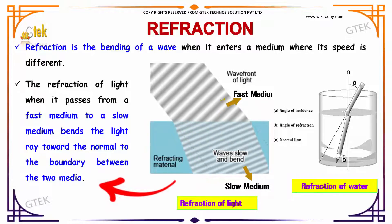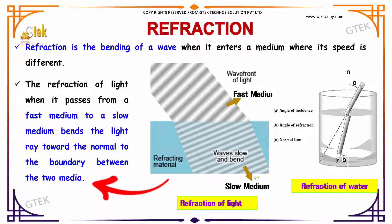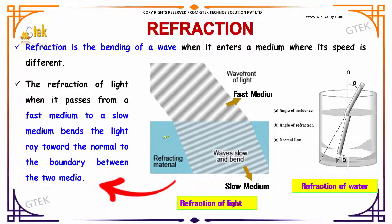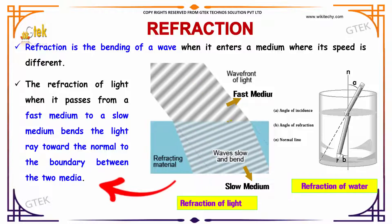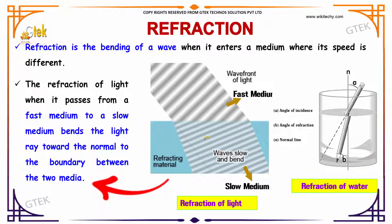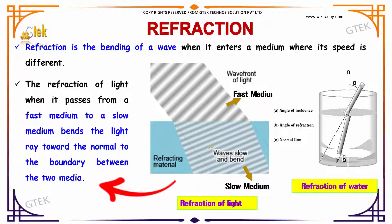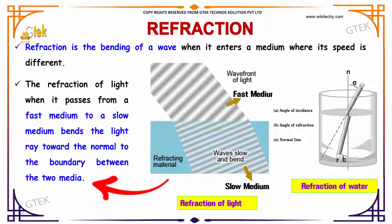You are able to see this is a fast medium and this is a slow medium. The refraction of light when it passes from a fast medium to a slow medium bends the light ray towards the normal to the boundary between the two media.